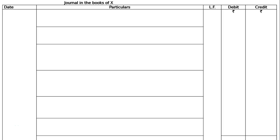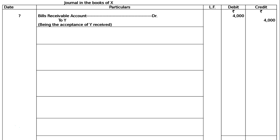The question is different uses of bills receivable. X draws on Y a bill for Rs. 4000, which was duly accepted by Y, and Y meets the bill on the due date. What entries would be passed in the books of X under each of the following circumstances? Journal in the books of X only. First, bills receivable account debited to Y, being the acceptance of the bill drawn by X accepted by Y.